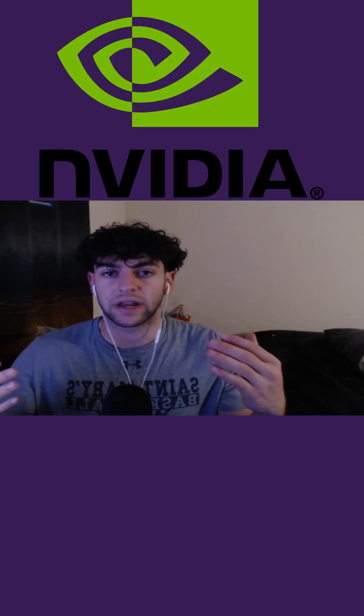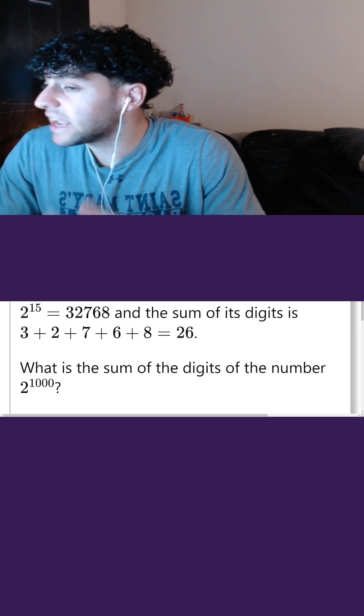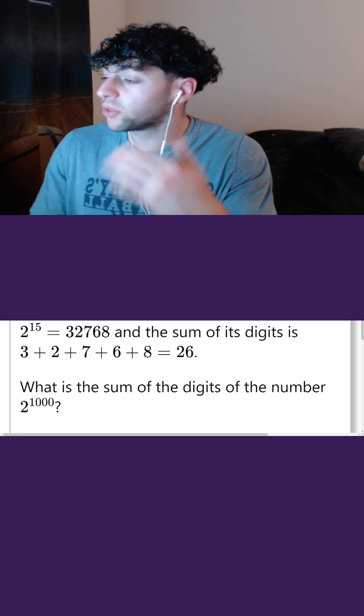Day 14 of solving math problems in C until NVIDIA hires me. We're told that 2^15 equals 32,768 and the sum of its digits is 26. We have to find the sum of the digits of 2^1000.